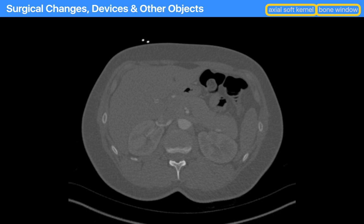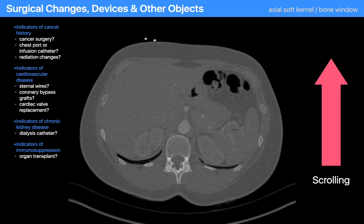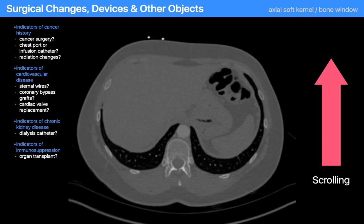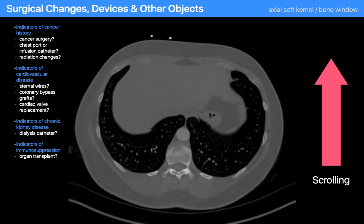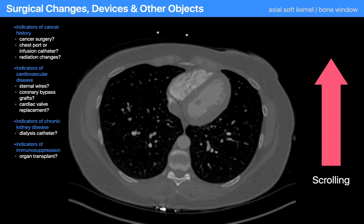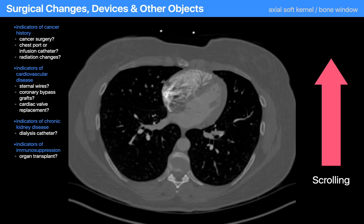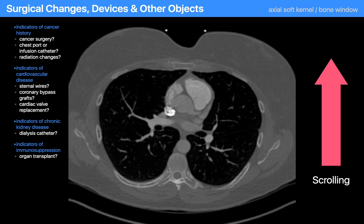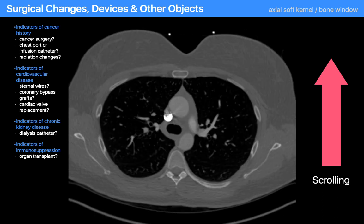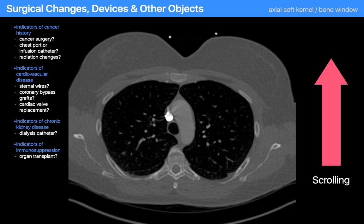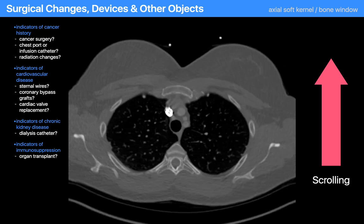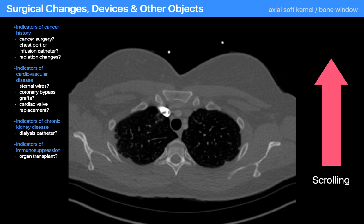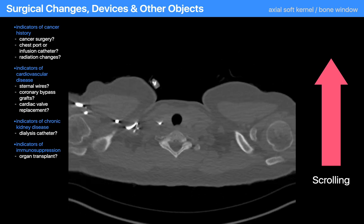I like to begin my CT read with the soft kernel axial images on a bone window. As I scroll through the stack, I'm looking for evidence of a history of cancer — things like a chest port, Hickman catheter, staple lines in the lung, evidence of a nephrectomy, lobectomy, pneumonectomy, radiation fibrosis, or surgical clips at the neck base. I'm also paying attention to indicators of cardiovascular disease: sternal wires, coronary artery bypass grafts, cardiac valves. I pay attention for evidence of CKD — a wide-bore dialysis catheter or stents in the central veins — and whether this patient has had a liver, heart, or lung transplant, and is therefore possibly immunosuppressed.